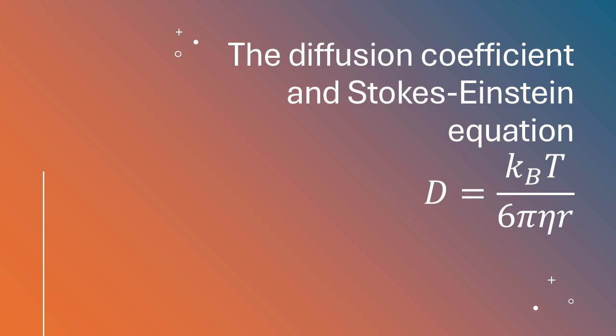Now scientists must have a way to quantify how fast a substance diffuses in a given medium, right? Exactly. They use something called the diffusion coefficient, which is essentially a measure of how quickly a substance spreads out under specific conditions. It basically tells us how much area those particles are covering as they spread out over a certain amount of time. A higher diffusion coefficient means faster diffusion. And now we can get to the really interesting part, the Stokes-Einstein equation. It's a powerful tool that allows us to actually predict and understand this diffusion coefficient.